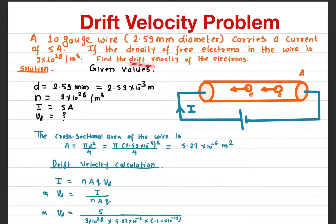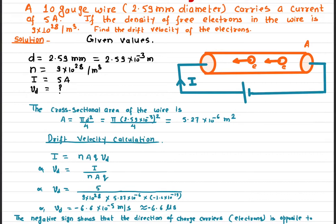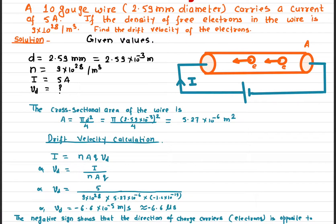Now we need to find out the drift velocity. Remember, the drift velocity is the average velocity with which the electrons move inside a conductor. The first thing I'll do is write down all the given values: the diameter is 2.59 millimeters, which converts to 2.59 times 10 to the negative 3 meters. The charge density of free electrons is 9 times 10 to the 28, and the current is 5 amperes.